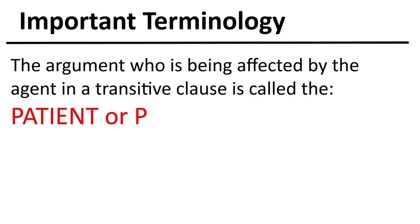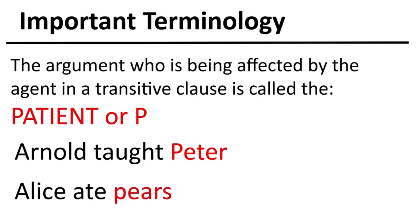The argument who is being affected by the agent in a transitive clause is called the patient, often abbreviated as P. In some ways, you can think of it like the patient is the one who is receiving the action from the agent. In the sentence Arnold taught Peter, Peter would be the patient, since Peter is the one who is being taught by the agent, Arnold. Peter is being affected by the agent. In the sentence Alice ate pears, pears would be the patient, because the pears are the ones who are being affected and eaten by Alice, the agent.